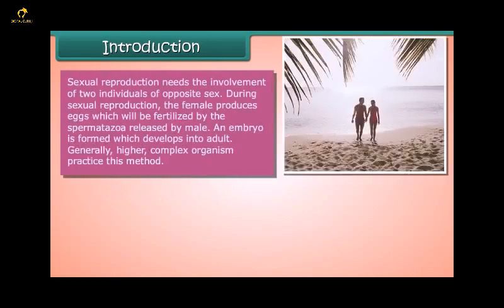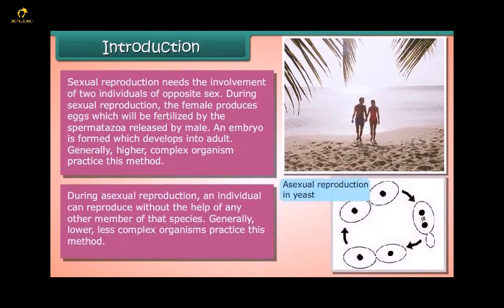Sexual reproduction requires the involvement of two individuals of opposite sex. The female produces eggs which are fertilized by spermatozoa released by the male. An embryo is formed which develops into an adult. Generally, higher and more complex organisms practice this method. During asexual reproduction, an individual can reproduce without the help of any other member of that species; generally lower, less complex organisms practice this method.